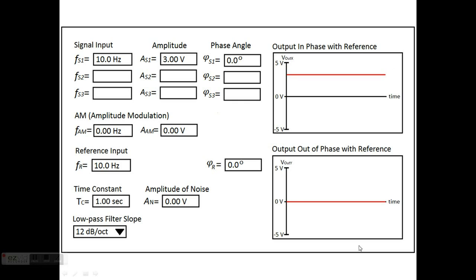We also have two boxes for our output over here. The top box, VoutX, is the output in phase with the reference. This bottom box, VoutY, is the output 90 degrees out of phase with the reference.